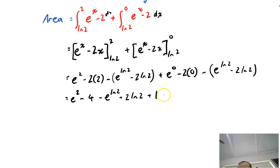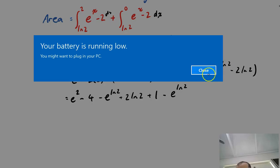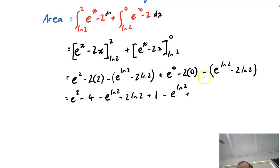minus 2 times 0, which is 0, minus e to the ln2 minus, minus, minus, which is plus, plus 2, minus, minus 2 ln2. All right,